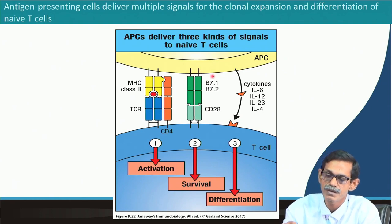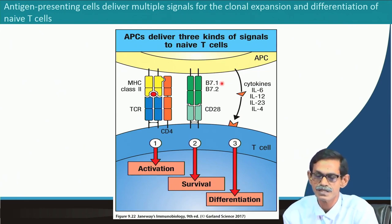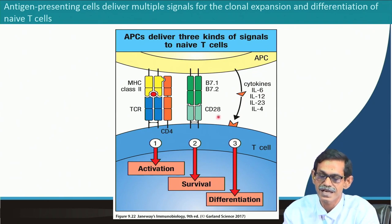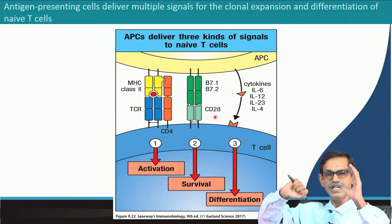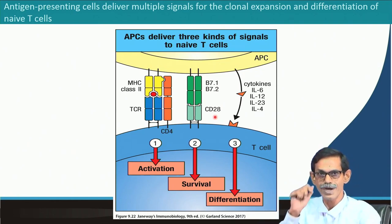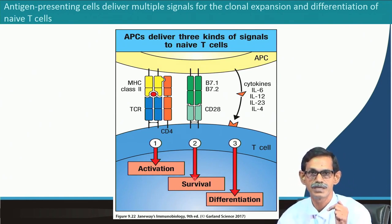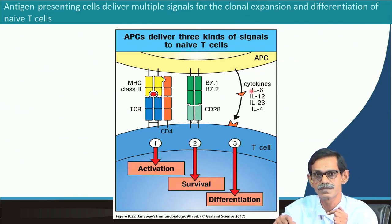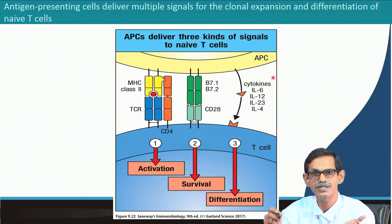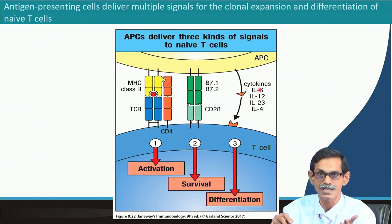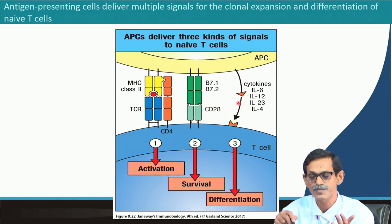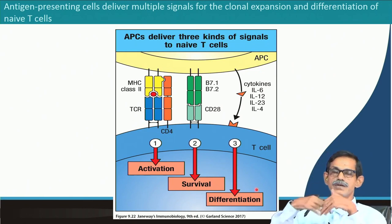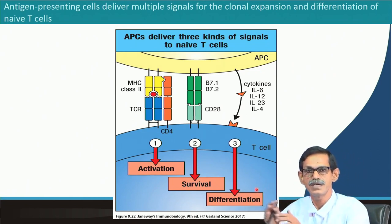The second signal comes from B7 — a heterodimer of B7.1 and B7.2 expressed on the antigen presenting cell — interacting with CD28 on the T cell. CD28–B7 interaction is very important; it gives the survival signal, so the cell survives. Additionally, the antigen presenting cell releases cytokines such as IL-6, IL-12, IL-23, and IL-4 — not all at once, but these cytokines bind to receptors on the T cell and give the third signal for differentiation.